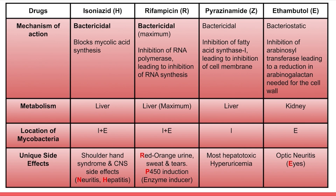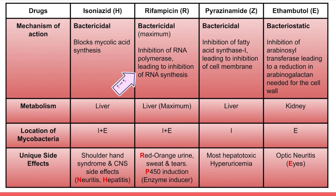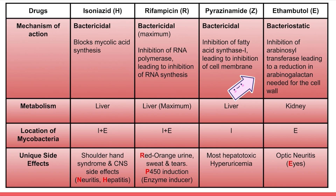Looking at the first-line drugs table — H, R, Z, E — isoniazid is bactericidal and blocks mycolic acid synthesis. Rifampicin is also bactericidal with maximum bactericidal properties, acting by inhibition of RNA polymerase leading to inhibition of RNA synthesis. Pyrazinamide is also bactericidal and works by inhibition of fatty acid synthase 1, leading to inhibition of cell membrane. Ethambutol is bacteriostatic — a key differentiating point — and works by inhibition of arabinosyl transferase, reducing arabinogalactan needed for the cell wall.